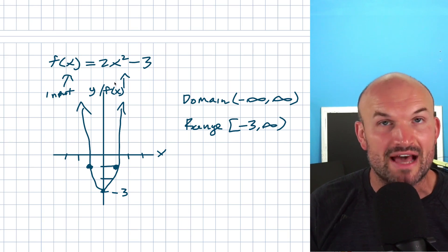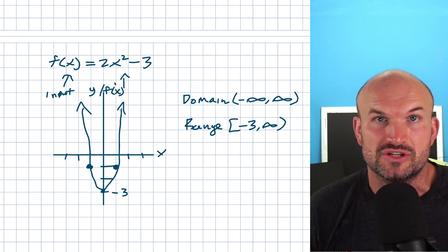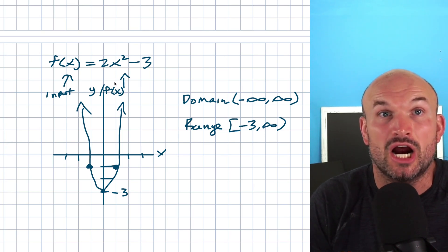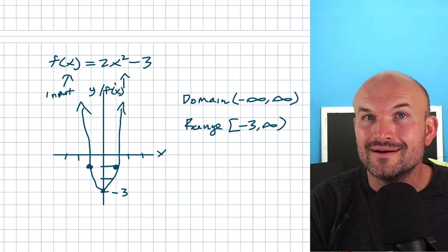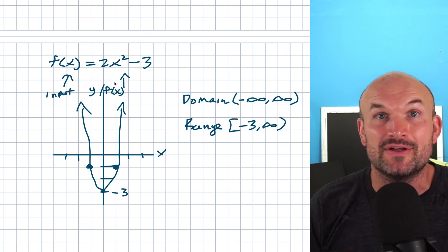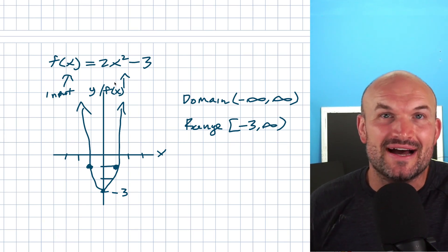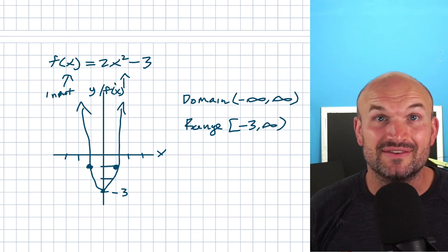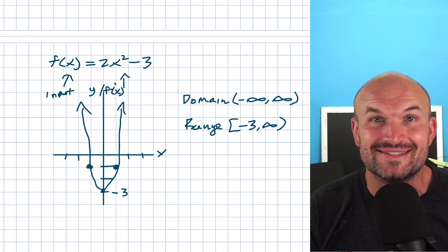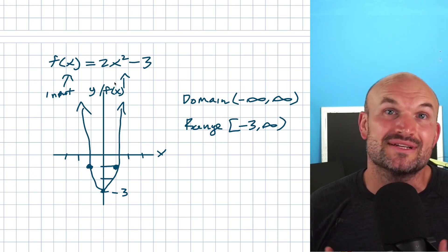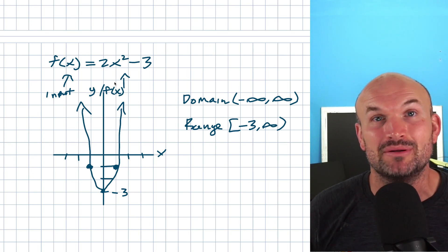This function was rather simple to identify the domain and range because it was easy to graph and visualize. But what about functions that are not easy to graph, or that have some restrictions on their domain? What are restrictions on the domain and how do we find the domain and range from there? In the next video, that's exactly what I'll explore — go ahead and check it out if you're interested, or check out the examples below for more practice finding the domain and range of a function.